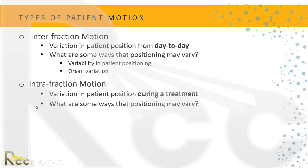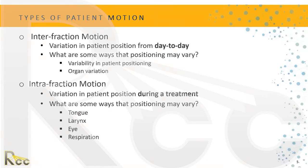For intrafraction variation, things like the position of the tongue — if it's at the top of the mouth against the hard palate — or the larynx, if the patient is swallowing a lot because they're nervous. Also eye position, whether they're looking up or down. One of the big ones we'll talk a lot about today is respiration. When we take a big breath in or out, we're moving organs — our lungs, liver, heart — quite a bit.